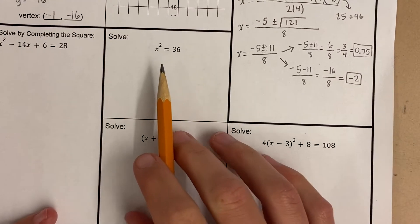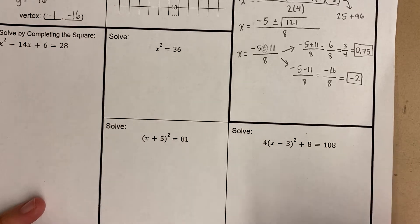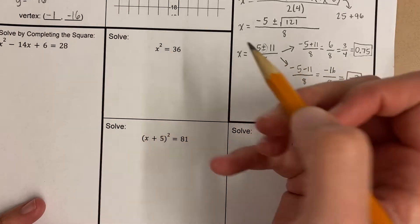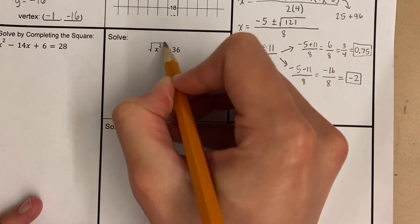Remember my goal when I solve equations is to get x by itself, and the way that I do that is I use inverse operations. Like if I have plus, I use minus. If I have times, I use division. But here I have squared. What's the inverse of squared? The square root.